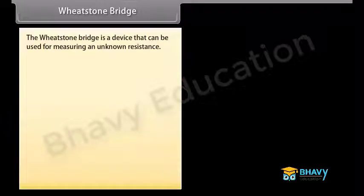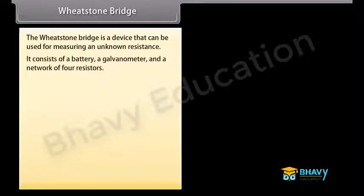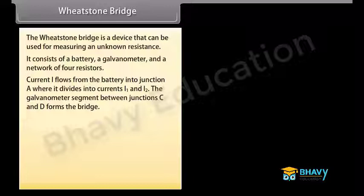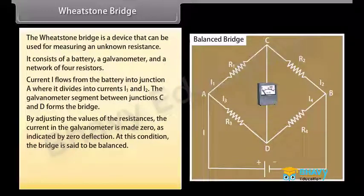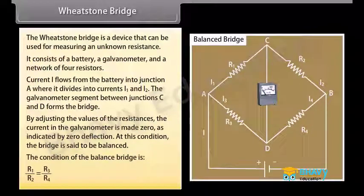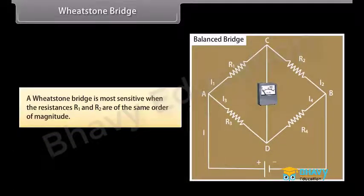The Wheatstone bridge is a device used for measuring an unknown resistance. It consists of a battery, a galvanometer, and a network of four resistors. Current I flows from the battery into junction A, dividing into currents I1 and I2. The galvanometer between junctions C and D forms the bridge. By adjusting resistances, the galvanometer current is made zero—the bridge is then balanced. The balance condition is R1 upon R2 equals R3 upon R4. The bridge is most sensitive when R1 and R2 are of the same order of magnitude.